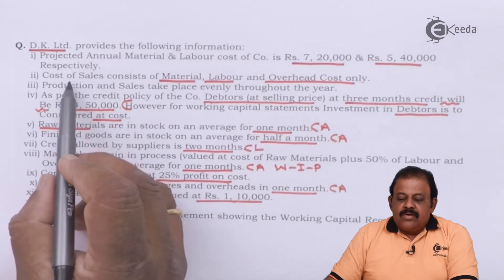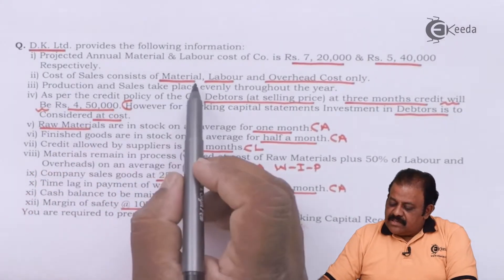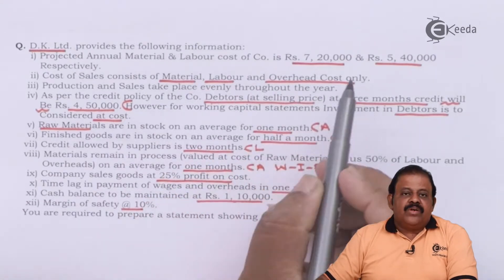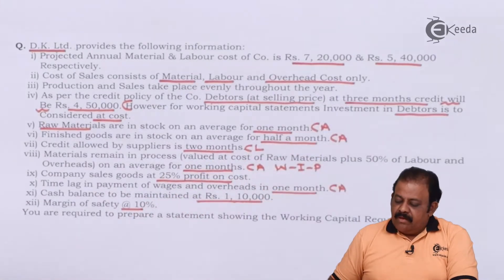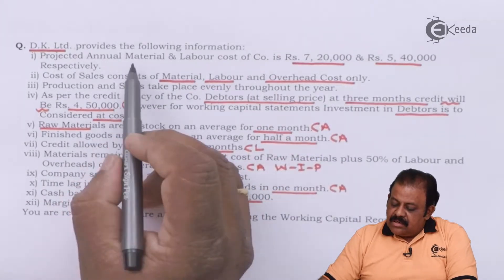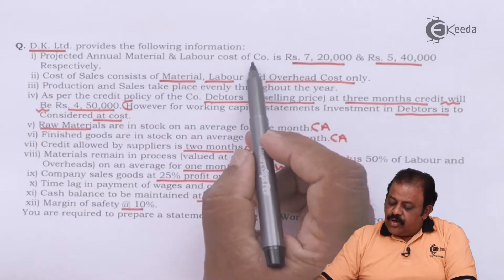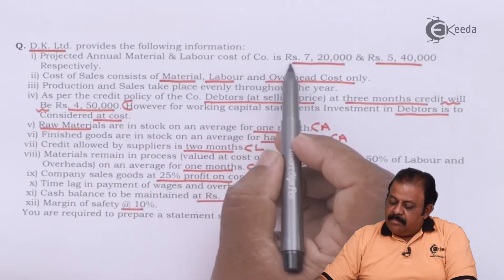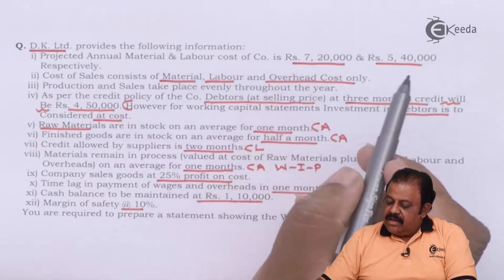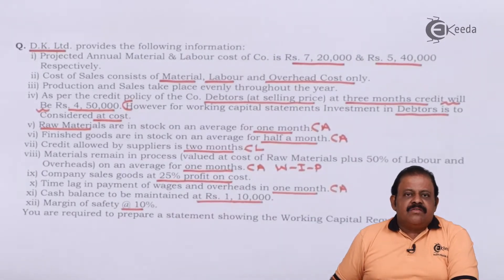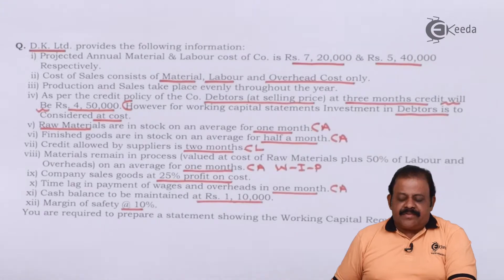They have given that cost of sales consists of material, labor and overheads cost only, whereas in the first line they have given information of only material and labor. That means the amount of overheads is missing information which we are required to calculate.